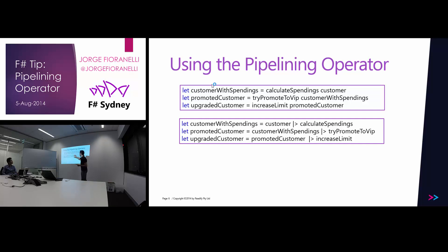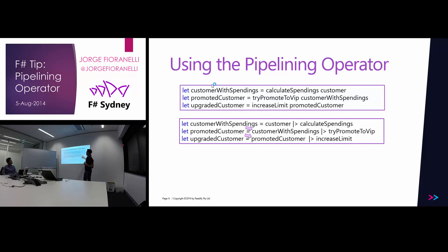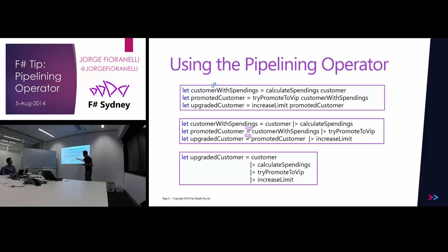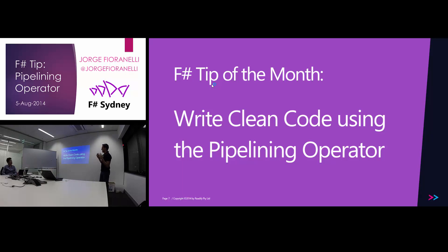Another way to write this is using the pipelining operator, swapping the argument order so the customer is sent as the last argument to each function. The output of each function becomes the input for the next. A better way to write the same code is like this: the customer flows through all these functions, and the different outputs become the input of the next function. You can see that in this way it is much cleaner, easier to understand, and easier to read. That's basically the tip for this topic — using pipeline operators to be more declarative and write cleaner code in F#.